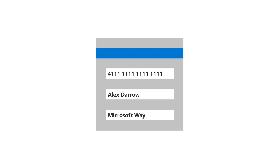You can update the payment method for your Microsoft 365 business subscription, such as your credit card, name, or address. Here's how.